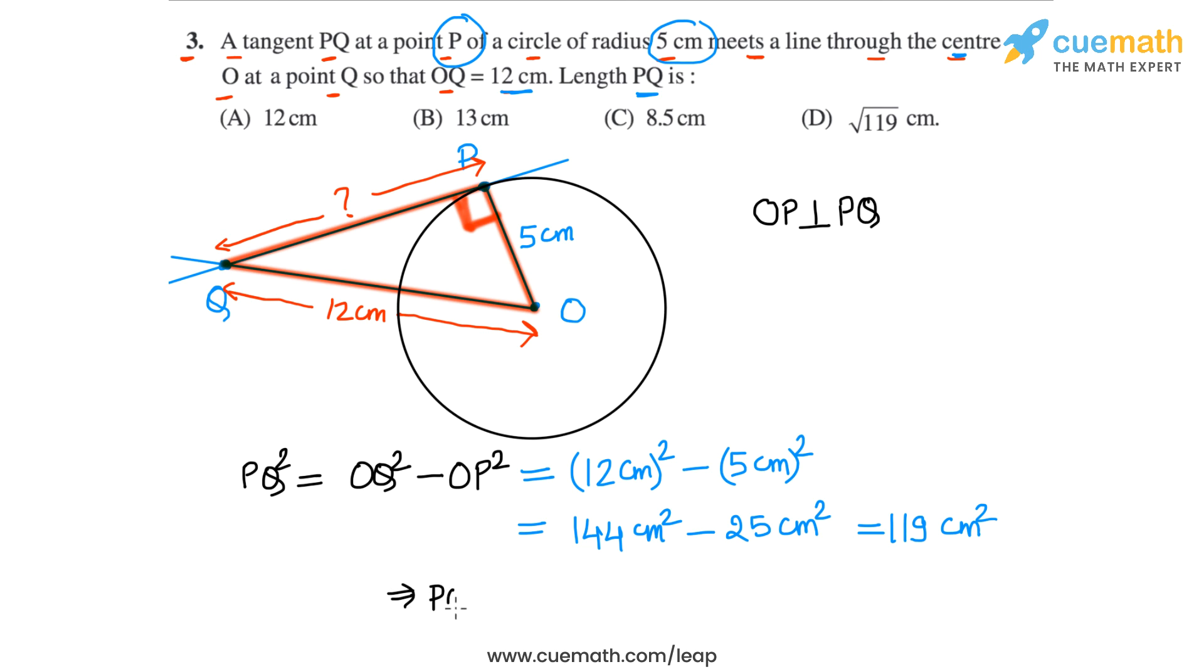And therefore, if we take the square roots now, so PQ will be root of 119 centimeters. So this is the length of PQ, root of 119 centimeters. This is the value given in option D. So option D is the correct answer in this case.